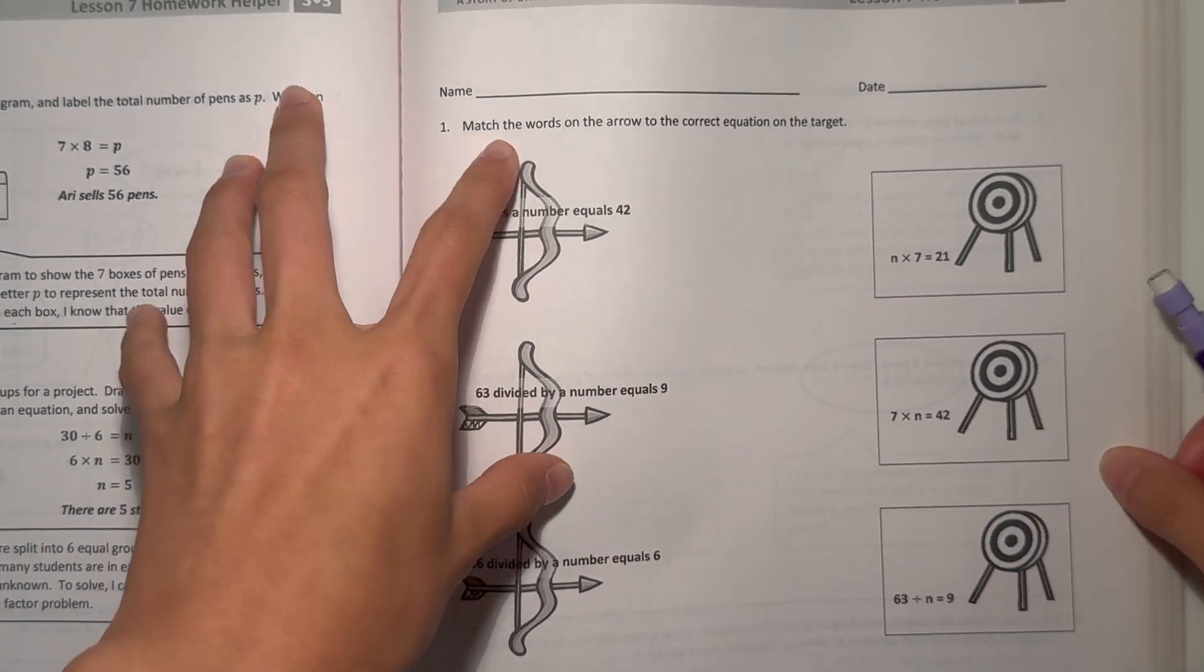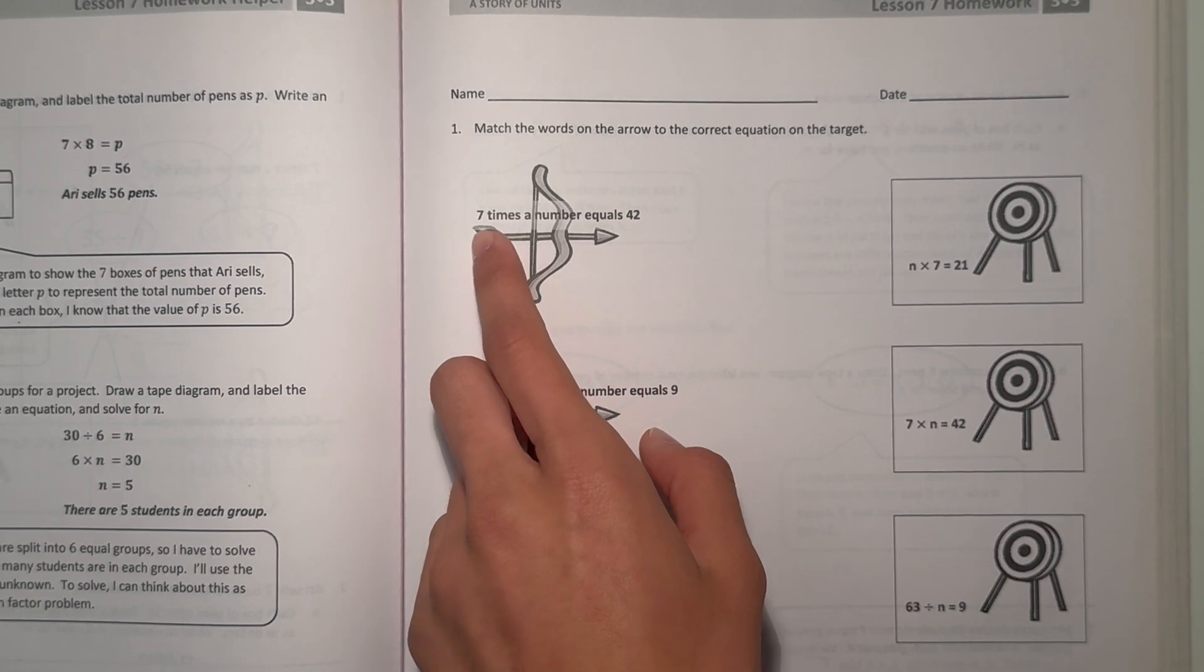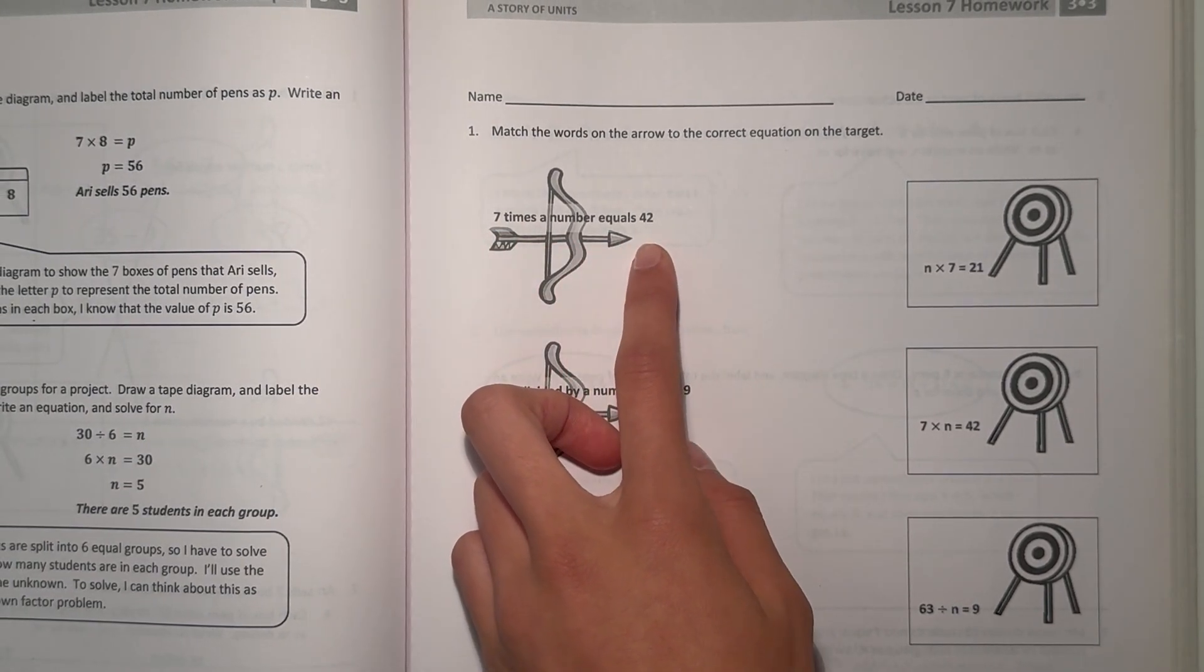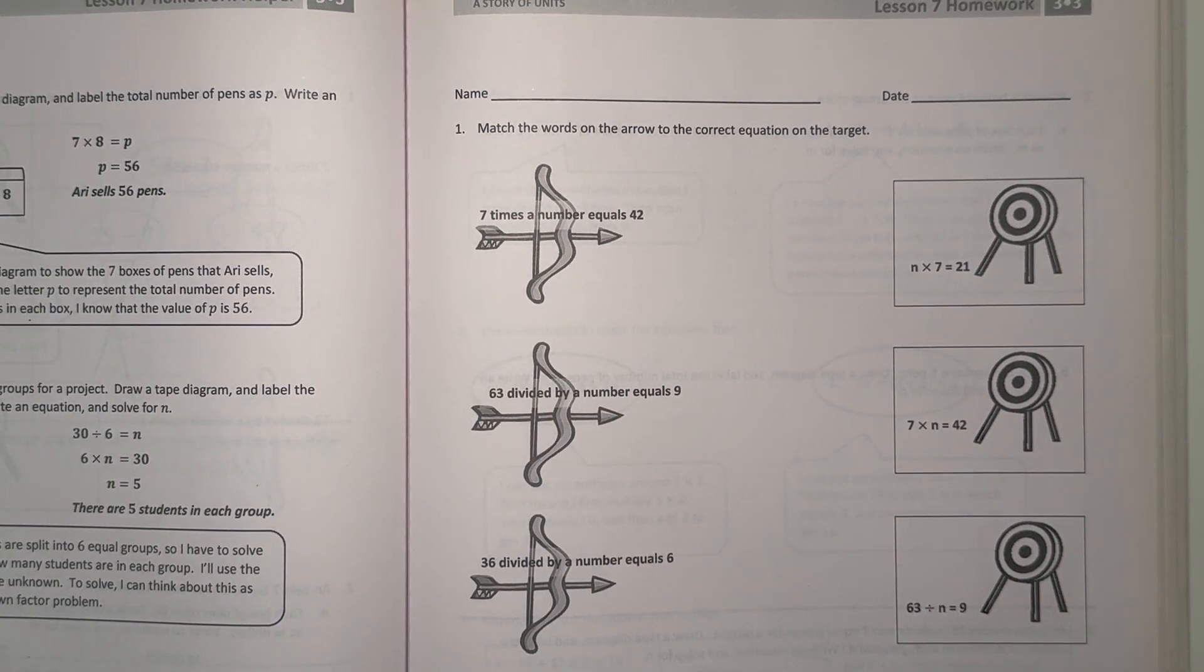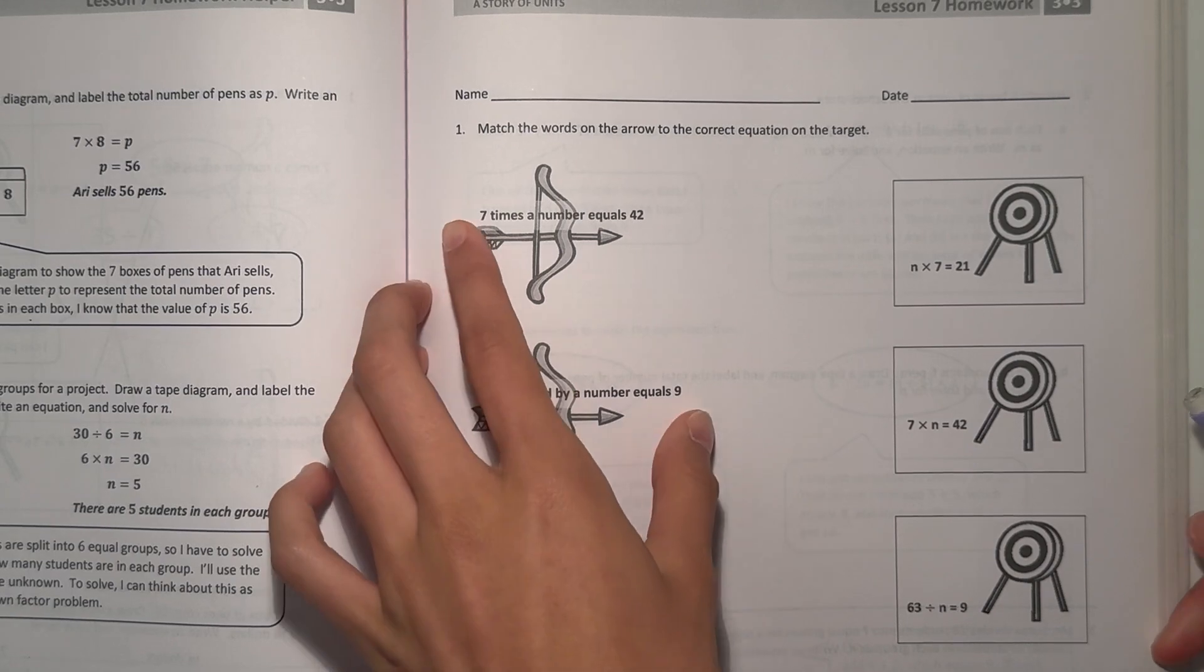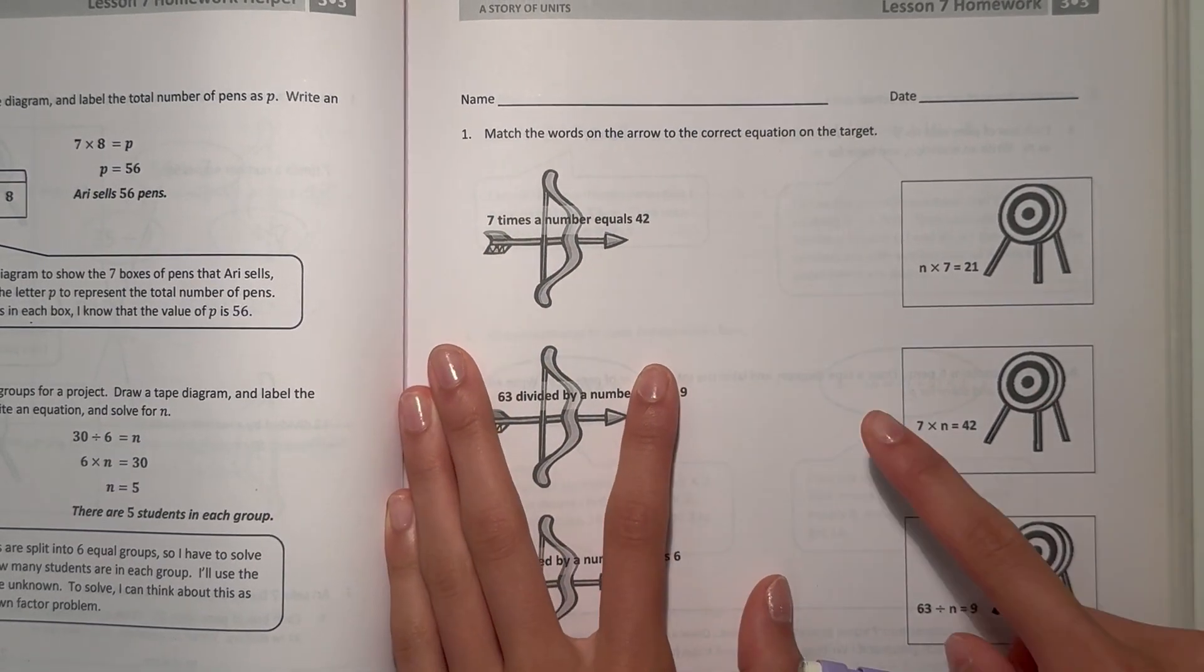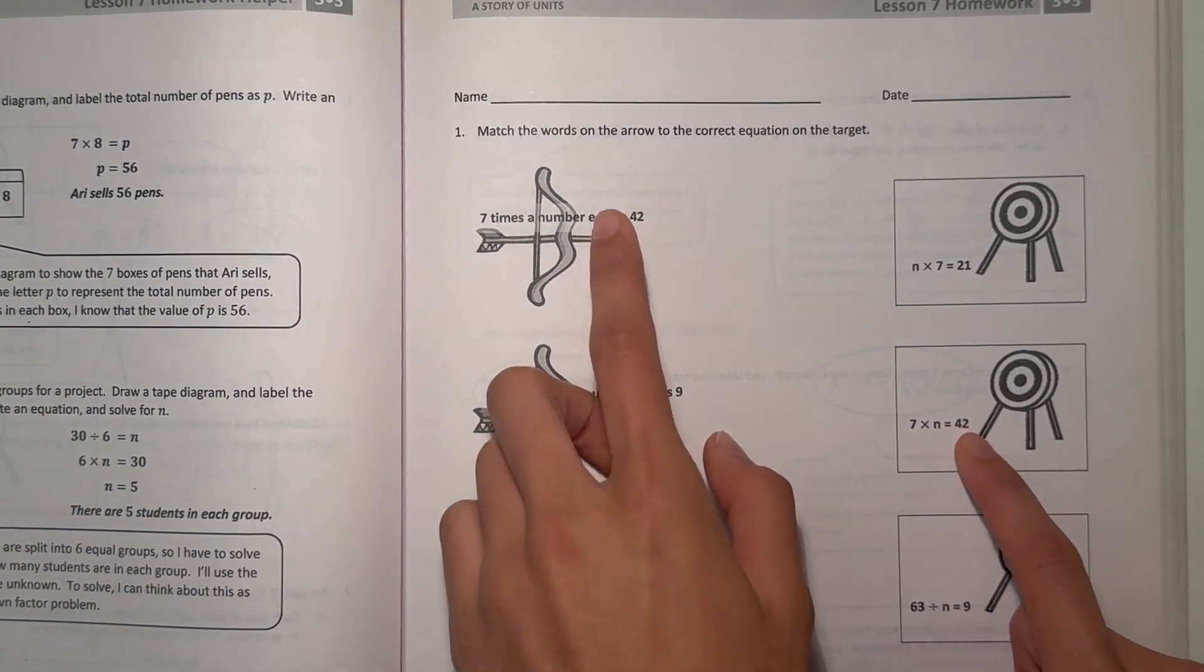Number 1, match the words on the arrow to the correct equation on the target. Alright, so let's see, what are we doing here? First, the arrow, we have 7 times a number equals 42. So 7 times a number, and our number would be represented by, in this case, n. So 7 times a number equals 42. Well, our equation would look like this one. 7 times a number, but we don't know what number it is, equals 42.